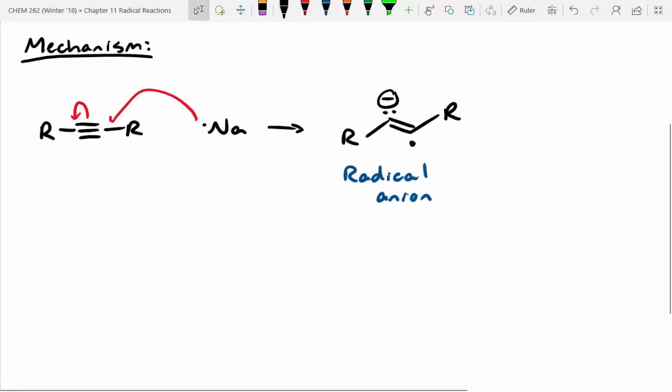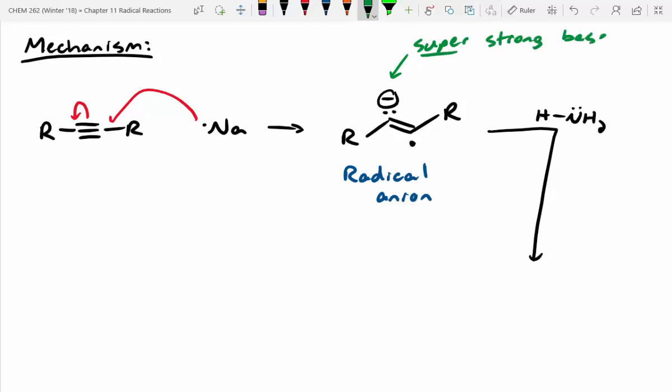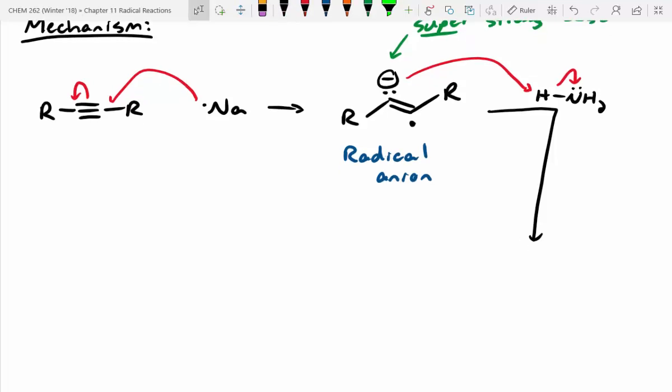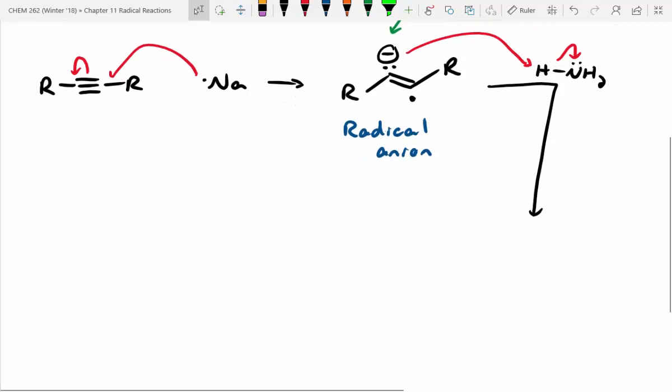And the next step, we have ammonia around. Ammonia is a really crummy acid. Normally, we think of ammonia as a base. However, this position here is a super strong base. We know that carbons with negative charges are really unhappy. And so in this case, it's going to steal a proton from ammonia. Ammonia has a pKa of about 38, which means that this is almost never observed unless you've got a carbanion, meaning a carbon with a negative charge.